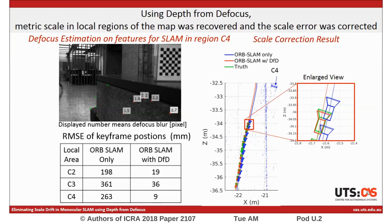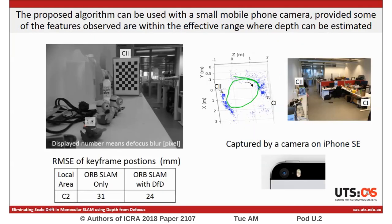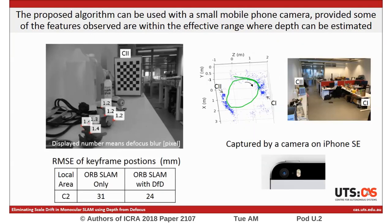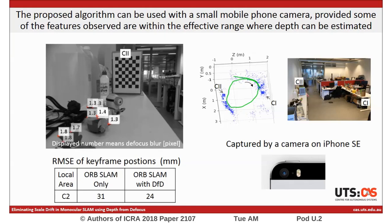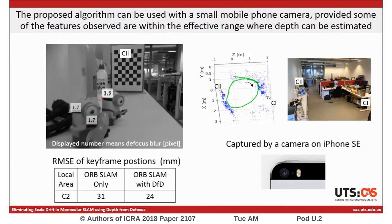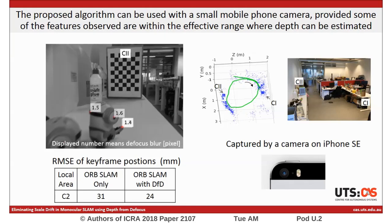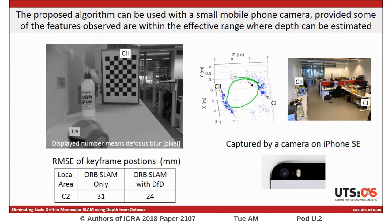The root mean square errors shown in this table show the effectiveness of our method. This is a demonstration using a small phone camera on iPhone SE. The proposed algorithm can be used with a small mobile phone camera when some of the features observed are within the effective measuring range.